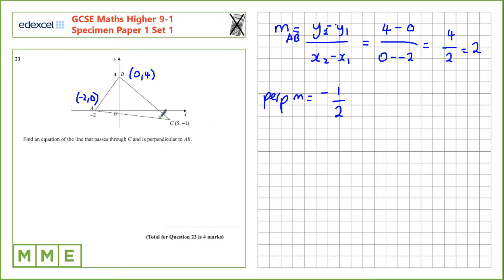Now that we've got the gradient, we can write down part of our line here. We know it's going to be the form Y equals MX plus C, and now we can write in the gradient, Y equals negative 1 half X plus C.